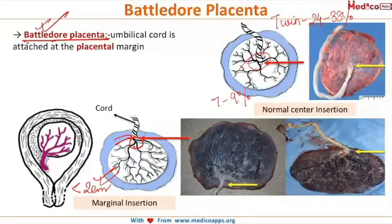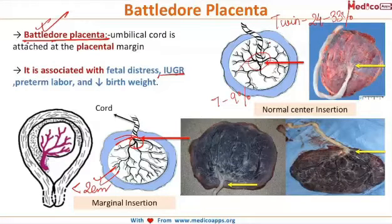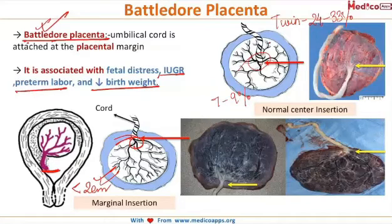Battledore placenta may result in IUGR, preterm labor, and decreased birth weight. If the placenta is low lying, then during delivery this marginal cord insertion may be compressed, leading to fetal distress.